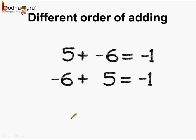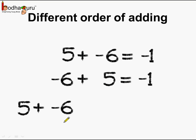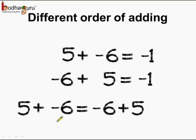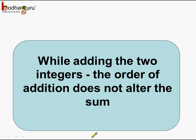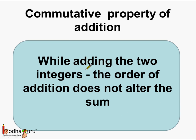So what can we say? Even on changing the order of addition, the answer is the same, which is minus 1. So 5 plus minus 6 is the same as minus 6 plus 5 — just the order is changed, and the answer is still minus 1. We can say: while adding two integers, the order of addition does not alter the sum. This property is called the commutative property of addition.